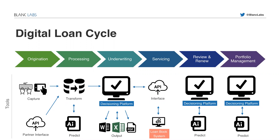On the servicing side, this decisioning platform through APIs connects with the loan book system to leverage the legacy system and existing data, while maintaining the formality of booking and keeping the system of record for servicing. On the review, renewal, and portfolio management side, the decisioning platform is front and center, bringing all the data from origination and underwriting steps into portfolio management. We also see more and more use of predictive analytics across all the different steps to improve efficiency and how the decisioning platform works with the rest of the system.